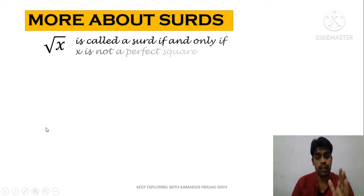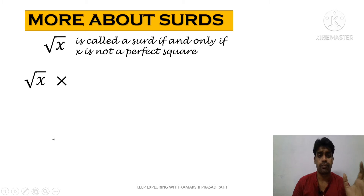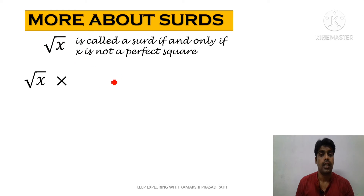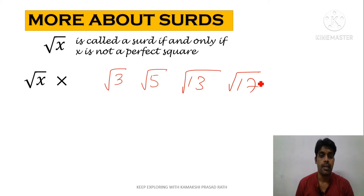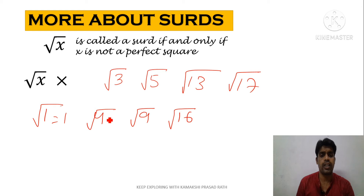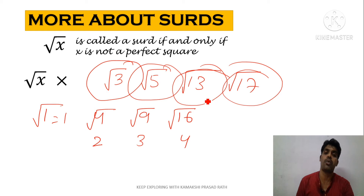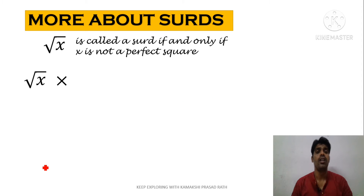Root x will be called a surd if and only if x is a non-perfect square. For example, root 3, root 5, root 13, or root 17 — these are not perfect squares. Perfect squares like 1, 4, 9, 16 can be simplified: root 4 is 2, root 9 is 3, root 16 is 4. But non-perfect squares cannot be simplified, so we have to convert them into whole numbers.